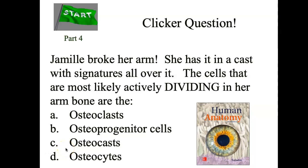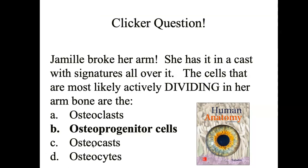Hi, welcome back to part four of skeletal. I'm going to start out with a clicker question. We use these when we're in person, but there's no reason why you can't do them too. Jamil broke her arm — she has it in a cast with signatures all over it. The cells most likely actively dividing in her arm are the osteoprogenitor cells. She's creating more cells to manufacture osteoblasts that will then become osteocytes.